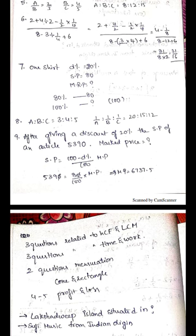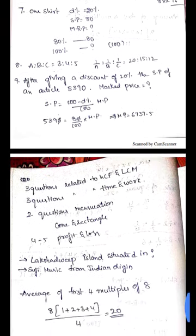Selling price after 80% discount is 80, so what is the marked price? 80% discount means selling price is 80, so 100% or MRP is 100.